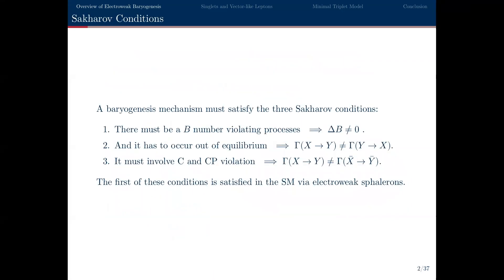Any mechanism to explain the origin of the baryon asymmetry needs to satisfy the three Sakharov conditions. First, you need some process that violates baryon number — otherwise you can't generate baryon asymmetry. Second, this process has to occur out of equilibrium, meaning the process generating the asymmetry and the process destroying it aren't happening at the same rate. Finally, this process needs to involve C and CP violation, which tells you there's some reason why generating baryons is favoured over generating anti-baryons. As long as you satisfy all three conditions, in principle you can generate a net baryon asymmetry.